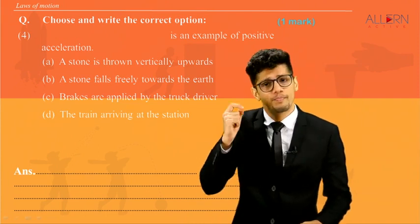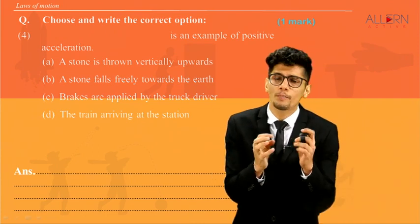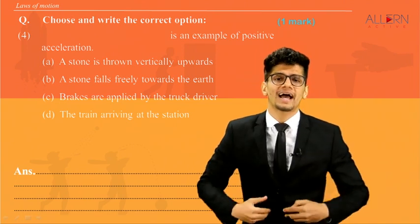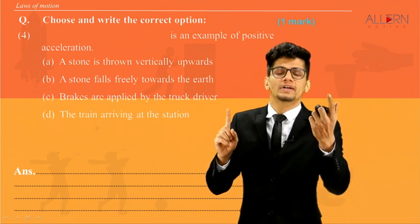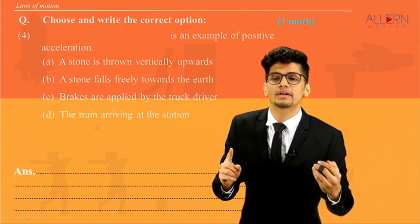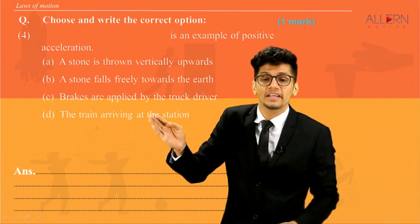Next question. Dash is an example of positive acceleration. We know positive acceleration means the velocity has to increase. A stone is thrown vertically upwards. When we throw something in the upward direction, its velocity keeps on decreasing.